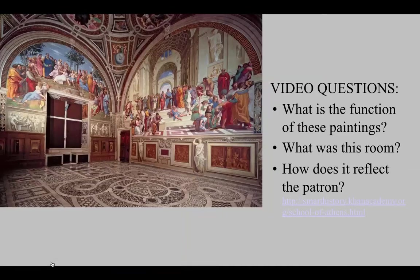The artwork we're examining is the School of Athens. As you watch the Smart History video and take notes, jot down the function of all the paintings in the room, what room it is, and how it reflects the patron. The patron's identity is important — it's a favorite multiple choice topic — because these works were made specifically for a certain person, and we need to understand the relationship between the imagery and why it was made for that person.